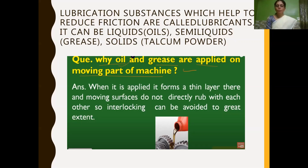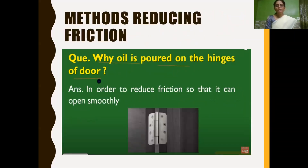If machine parts move against each other without lubrication, there will be more friction and the efficiency of the machine will be reduced. If you apply a thin layer of oil or grease on the machine surfaces, the moving surfaces do not directly rub against each other because the oil unlocks the interlocking between the ridges and grooves, so that friction can be avoided to a great extent. We also apply oil on the hinges of the door, because it reduces the friction so that the doors can be opened smoothly.